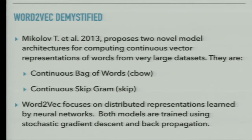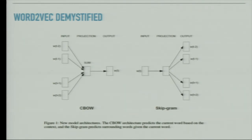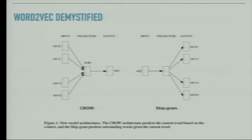Word2vec was introduced by Mikolov in 2013 with two models: continuous bag-of-words (CBOW) and the continuous skip-gram model. Both focus on distributed representations learned by neural networks, and both are trained using stochastic gradient descent and backpropagation. In CBOW, given a context window of five words, you try to predict the center word — for example, given 'the cat sat on mat', predict 'sat' from the surrounding words. The skip-gram model does the reverse: given the center word, predict the surrounding words. You can define these vectors as a lookup table and learn them using SGD.